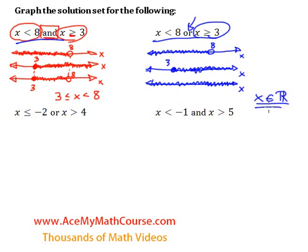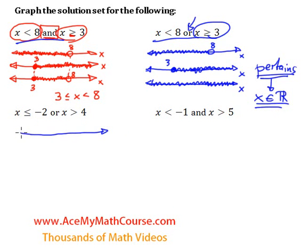I'll write it like this — this symbol means 'pertains to'. It looks like an 'e', but it's a symbol meaning 'pertains to all real numbers', which just means x is in the set of all real numbers. So let's do one more for each. Starting with x is smaller or equal to negative 2. I have a closed dot here — it's filled in because we're including negative 2 as a solution — and x is smaller than that, so we highlight the area to the left of it.